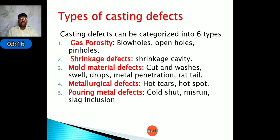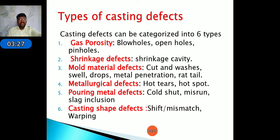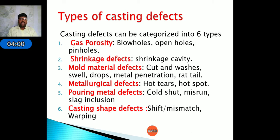Fifth are pouring metal defects, occurring during pouring of molten metal into the mold cavity — related to pouring time and gating ratio — including cold shot, misrun, and slag inclusion. Sixth are casting shape defects: shift or mismatch and warping. In mold shift the mold shifts at the parting surface, changing the shape. Warping occurs when edges of U- or V-shaped objects deflect inward or outward.